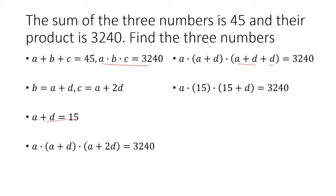So in both of these parentheses, A plus D is going to be 15. So we have A times 15 times 15 plus D. That is equal to 3,240. We can divide both sides by 15 and then distribute the A to both the 15 and the D. So we have 15A plus AD equals 216.